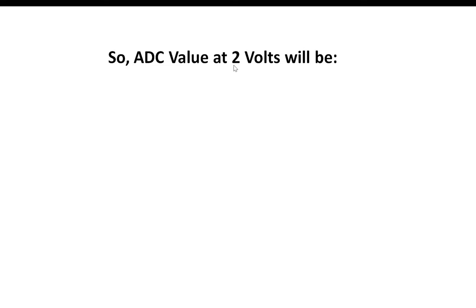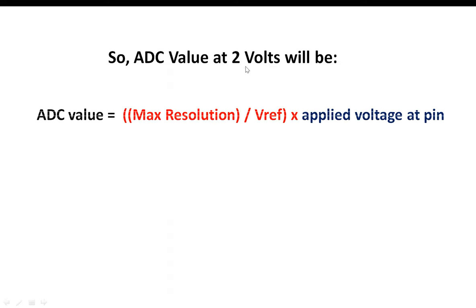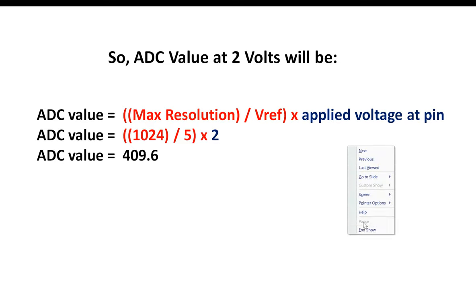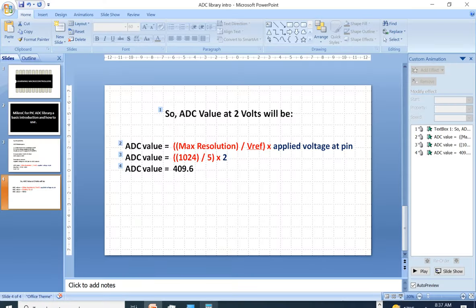For demonstration, I will use 2 volts at the ADC pin. Applying the formula: ADC value = (2 / 5) × 1024 = 409.6. We will program this value of 409.6 — rounded to 410 — in the microcontroller to turn on an LED. So let's get to MicroC for PIC.